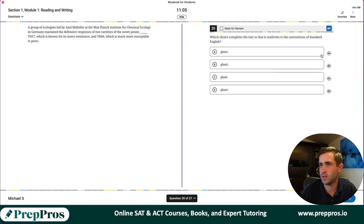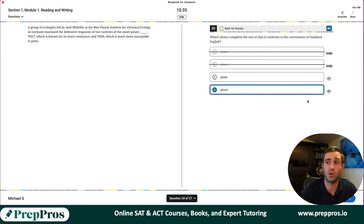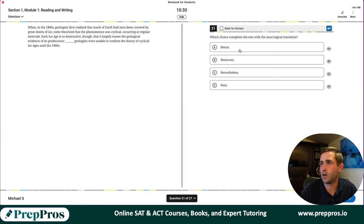Well, see if our same trick works here. Period, semicolon are the same on the SAT for a long time. So you can eliminate both of them. A group of ecologists led by Axel Milhoffer at the Max Planck Institute for Chemical Ecology in Germany examined the defensive responses of two varieties of the sweet potato. TN57, which is known for its insect resistance, and TN66. We're going to be using a colon here. We're giving explanation, definition, clarification. We don't have two independent clauses, so we can't use the period or semicolon.